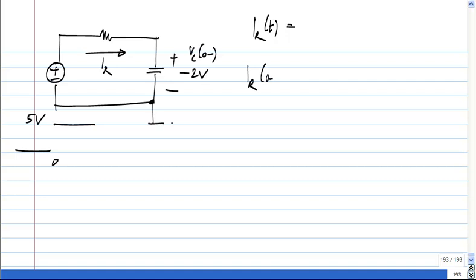First of all, what is IR just before the step is applied? Let me say this is 1 kilo ohm. So what is it? It is plus 2 volts. So this is plus 2 milliamps.